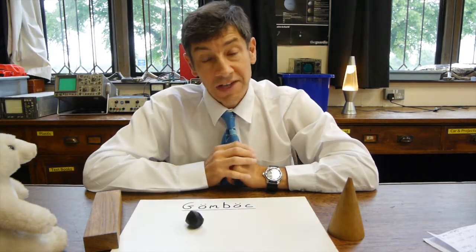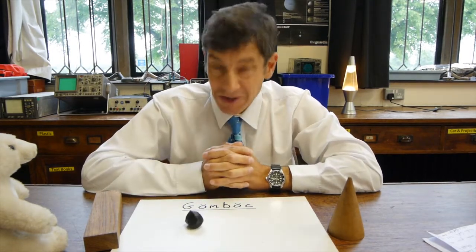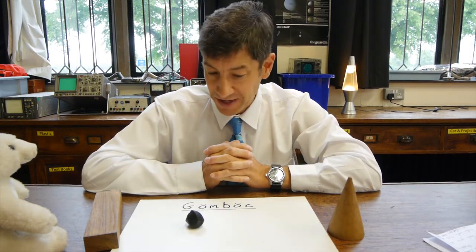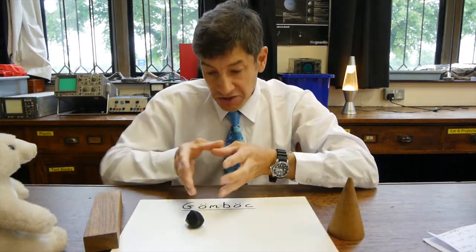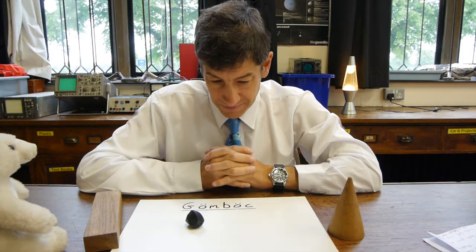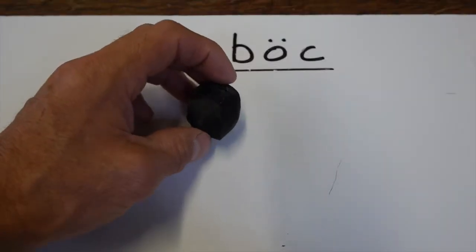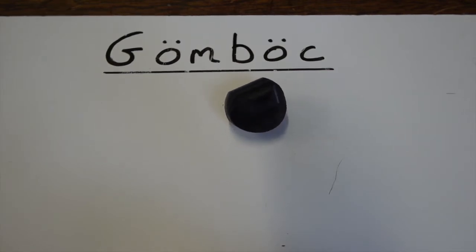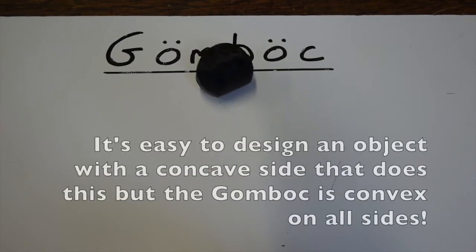It always lands on the same side, and that might seem obvious, but when I show you a few more examples you'll see that it's not as obvious as you think — in fact it's very very rare that this happens. In this close-up shot, when you let go of the gömböc it sort of shakes around for a while, teeters on the brink, and then just as you think it's going to stop it rights itself and always tips onto the same side.